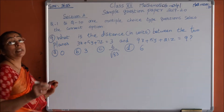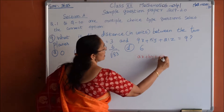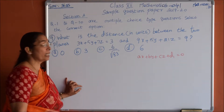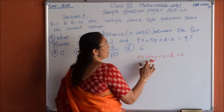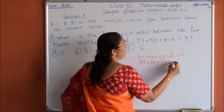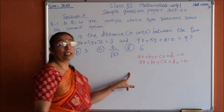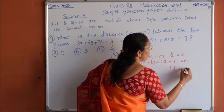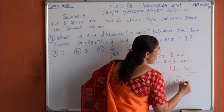The distance between 2 planes — the 2 planes must be parallel. Let the planes be Ax plus By plus Cz plus D1 equals 0 and Ax plus By plus Cz plus D2 equals 0 — the direction cosines are the same for parallel planes. The distance between 2 parallel planes is given by the formula: modulus of D1 minus D2 divided by root over A squared plus B squared plus C squared.